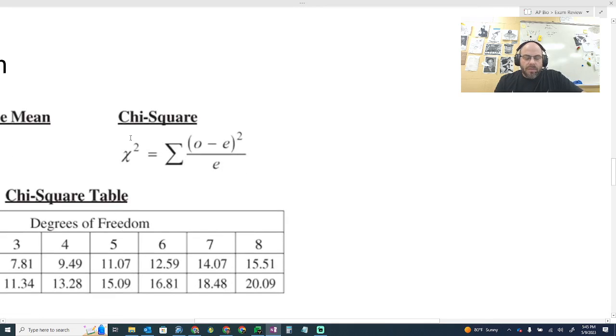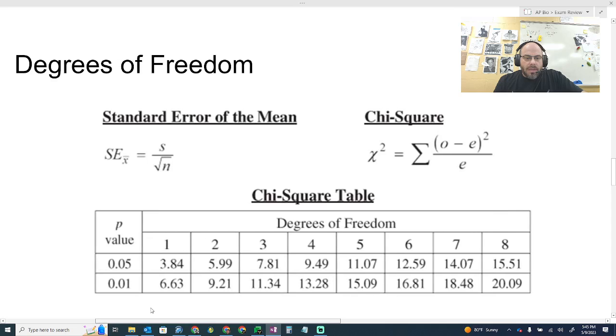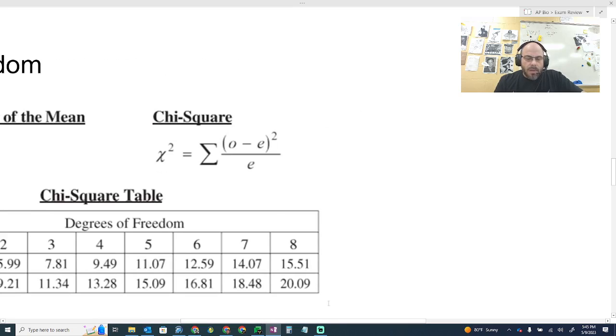So this is chi-square. Chi-square is the variable that you're solving for. This is not x-squared. This is not a number that needs the square root taken of it. You are solving for chi-square. So when you get this number, don't take the square root of it. That's number one.